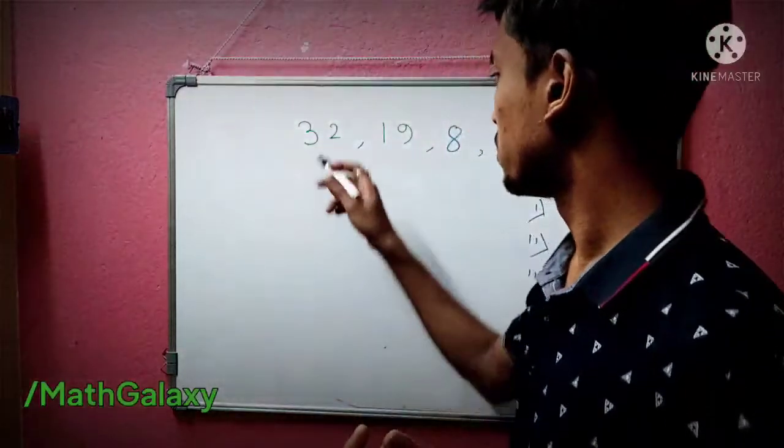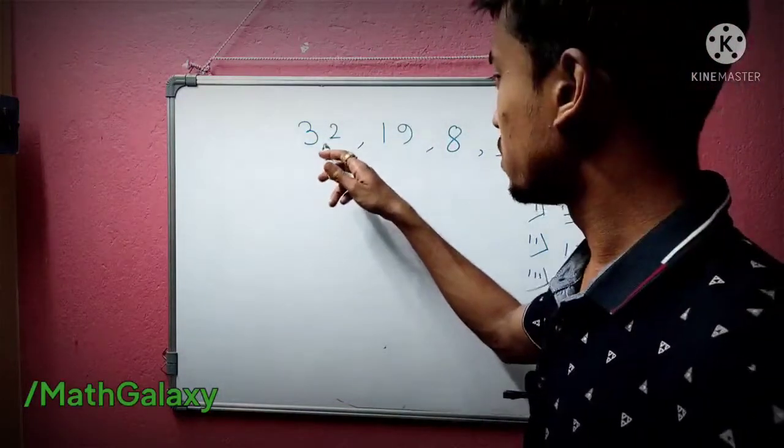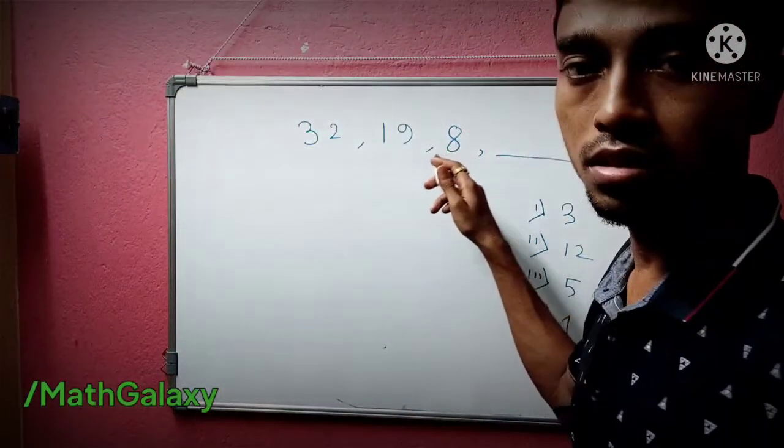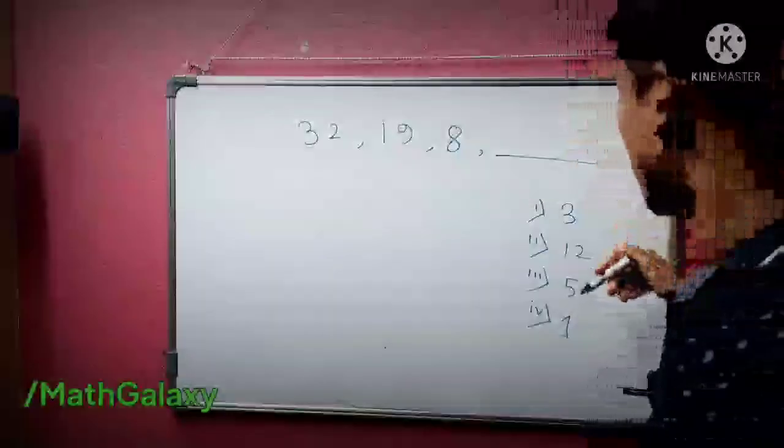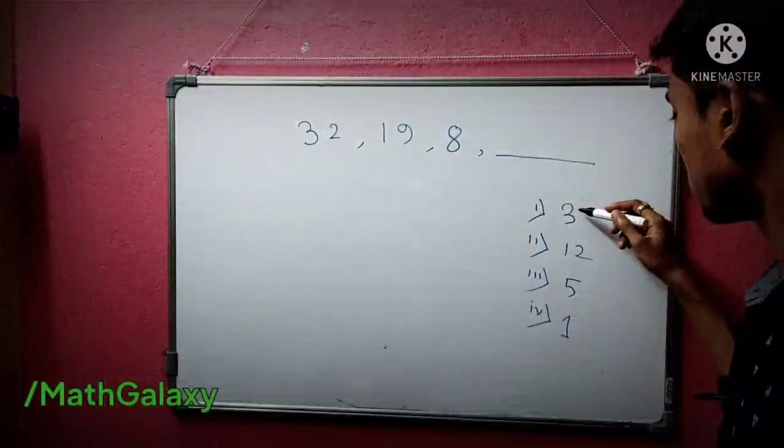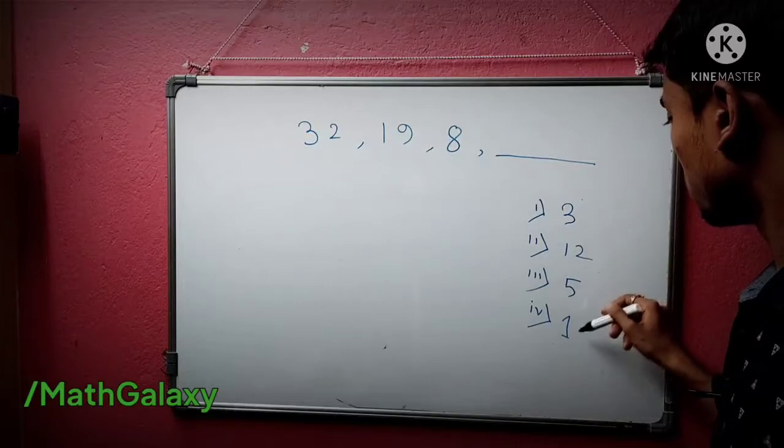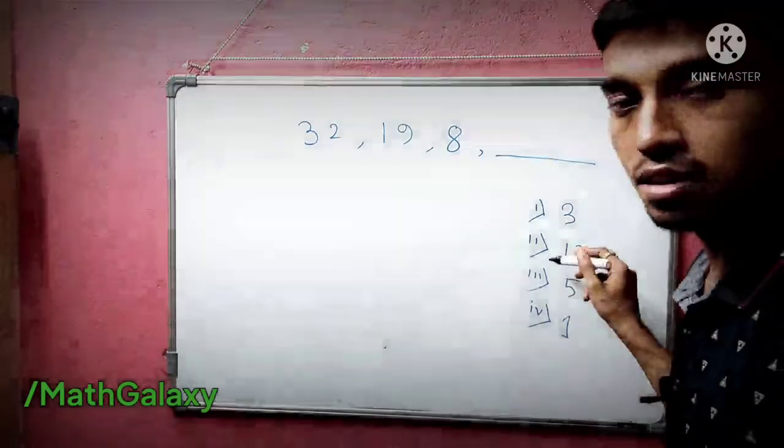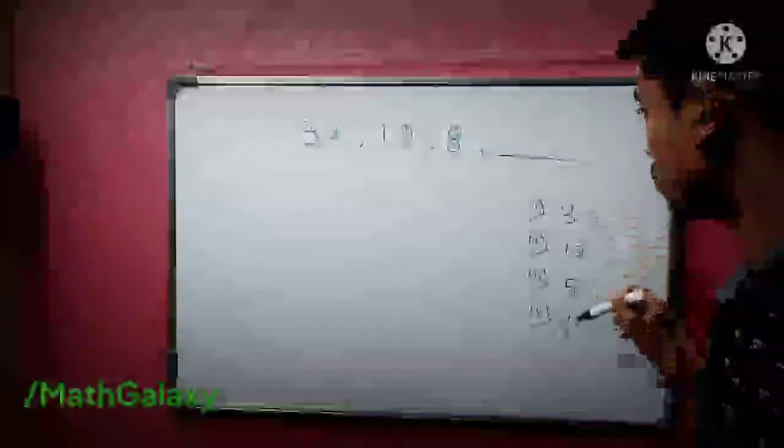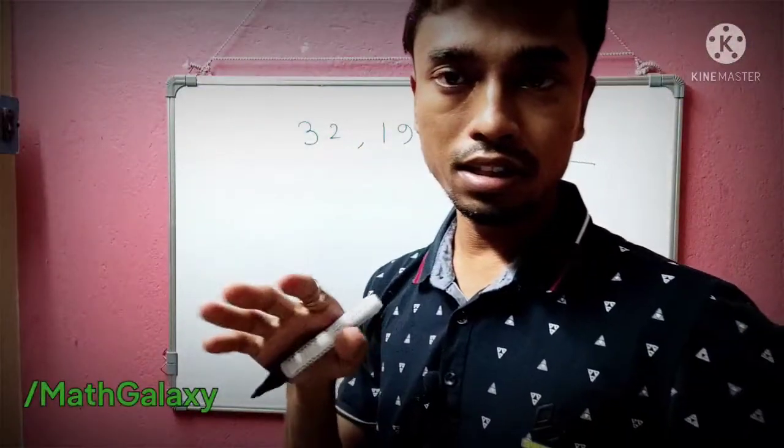We see that this is even, this is odd, this is even, so the next one must be some odd one. There are three terms: 3, 5, 1. These three are odd, so 12 is eliminated. Either 3, 5, or 1. Now you have to check what is the difference.